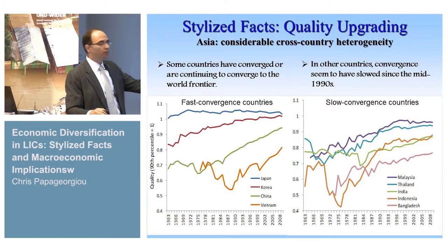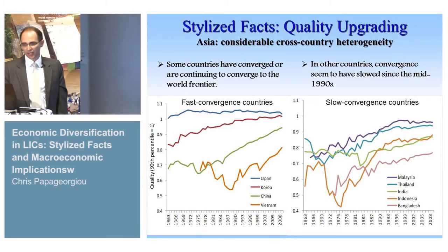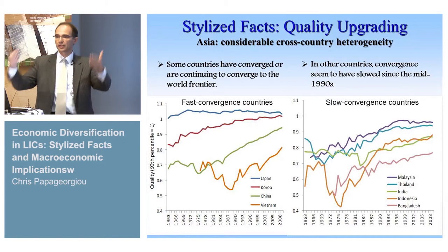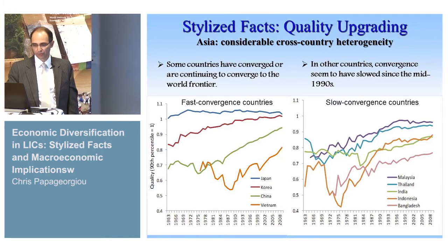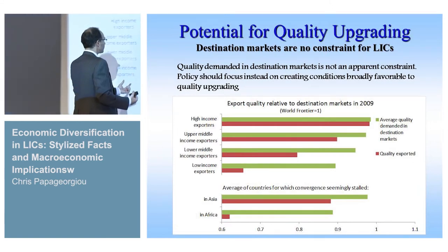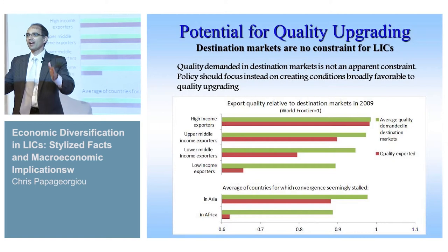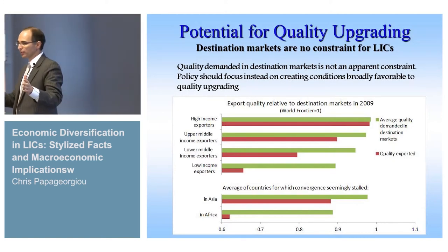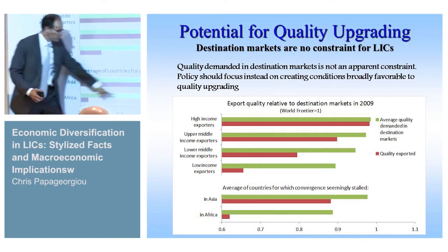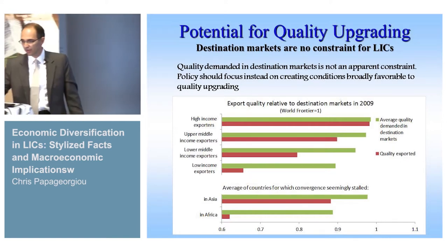We are able to split the quality measure all the way down to the good level, across countries — for Asian countries and for Sub-Saharan African countries — going back to the 1960s. This data can also show not only where Sub-Saharan Africa stands in terms of quality, but also its potential — where Sub-Saharan Africa can export and has potential. It is clear that the potential is huge, but actual quality is very low compared to Asia.